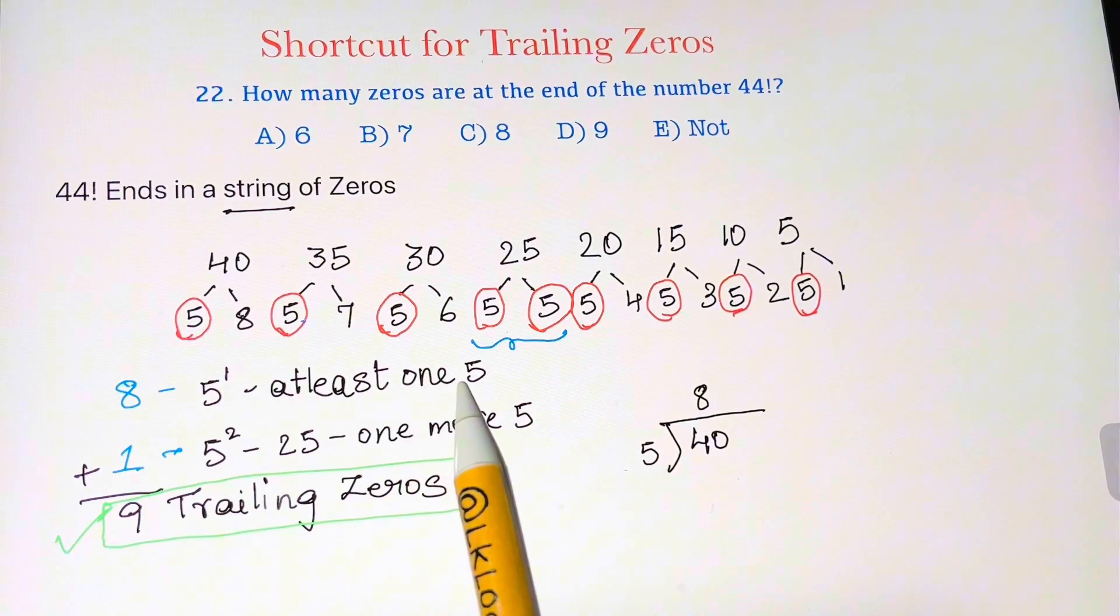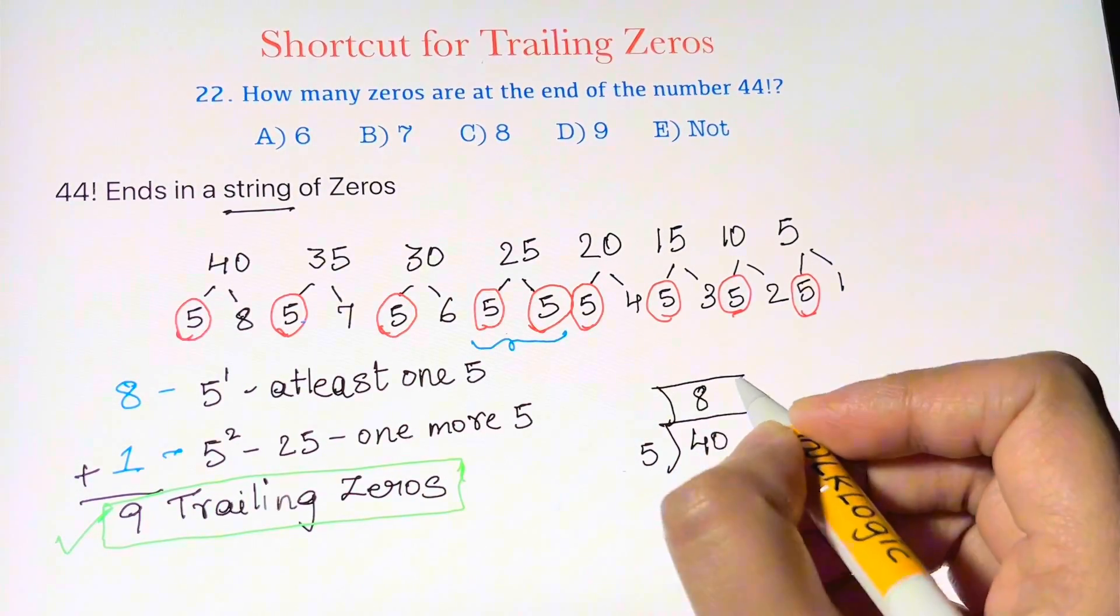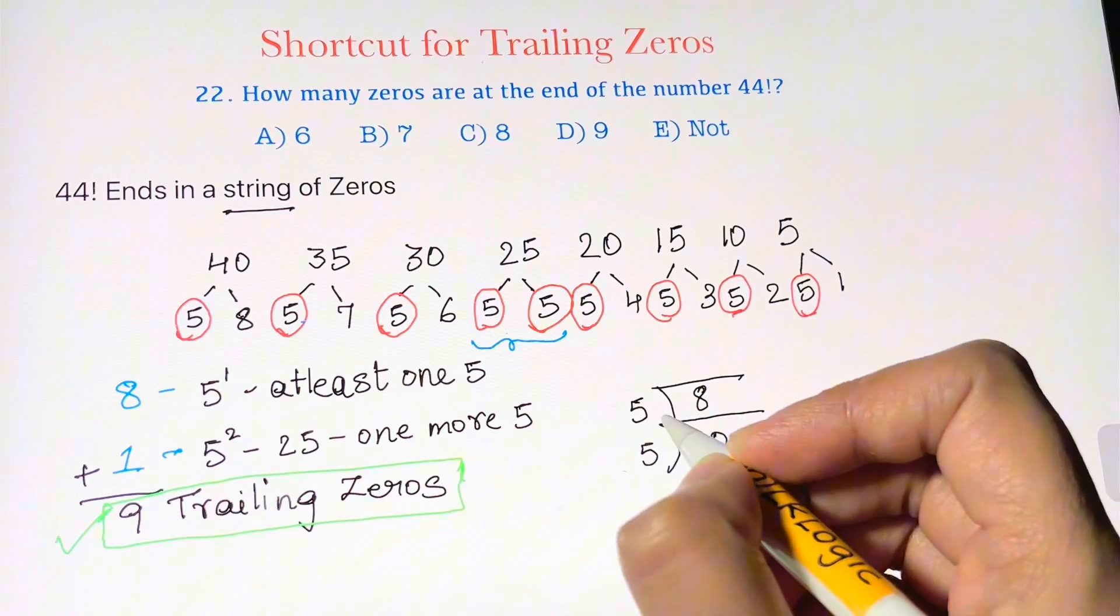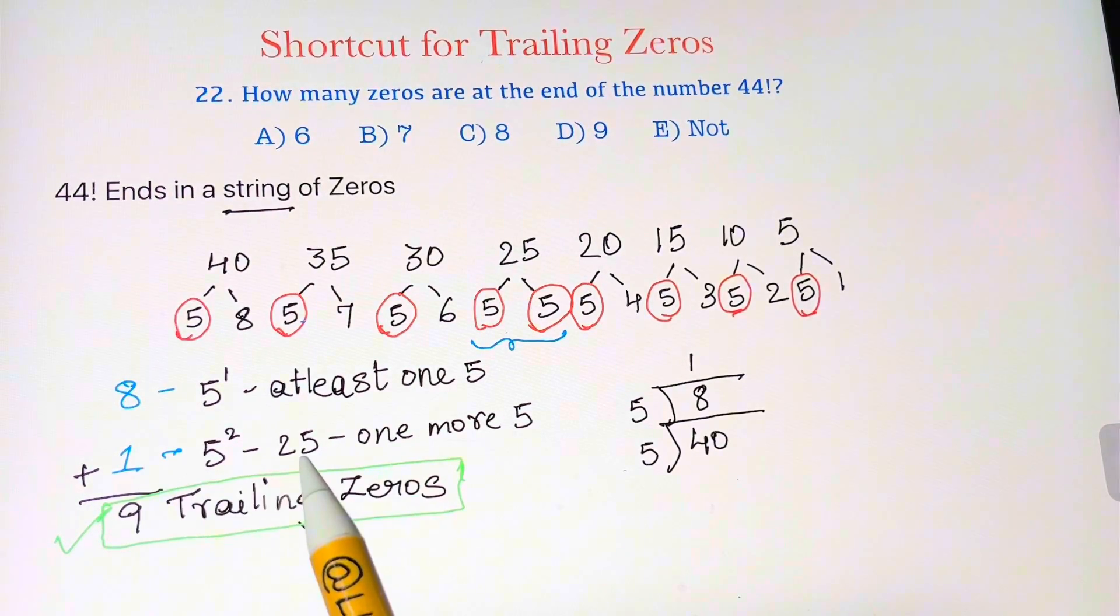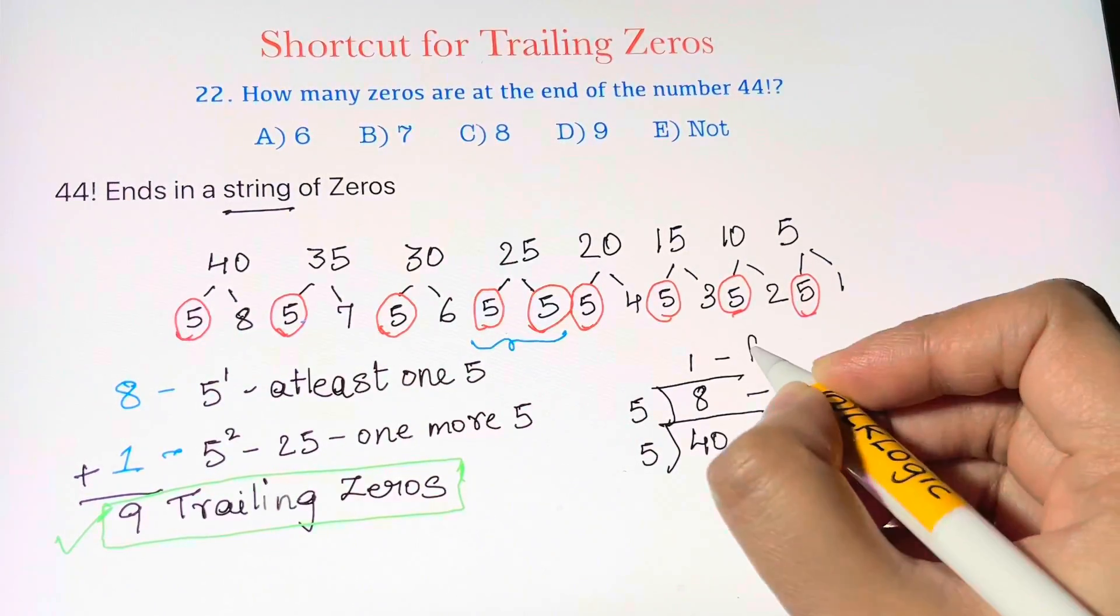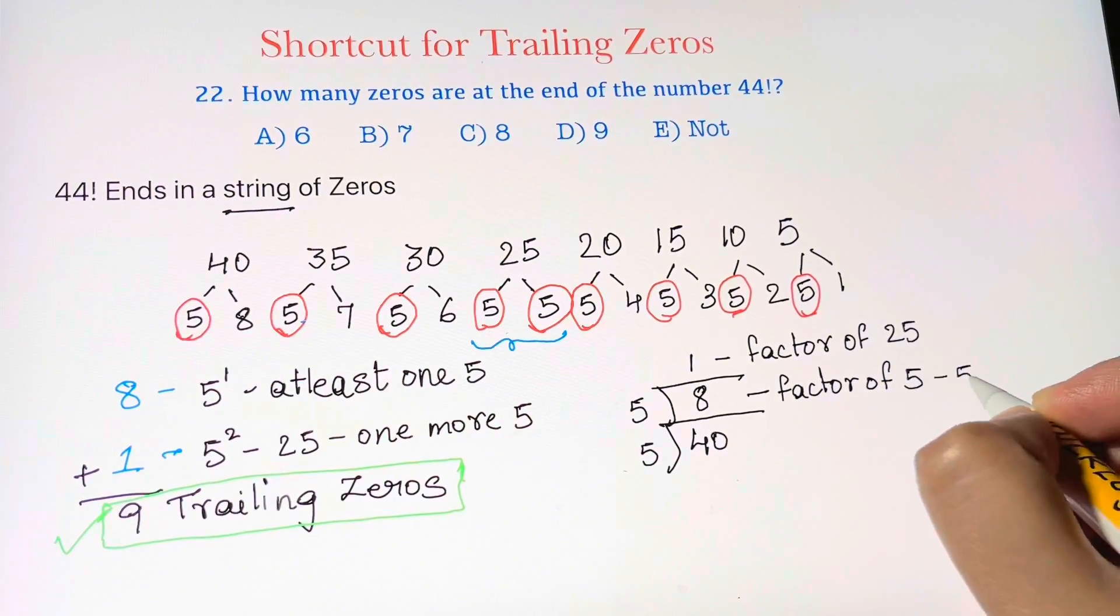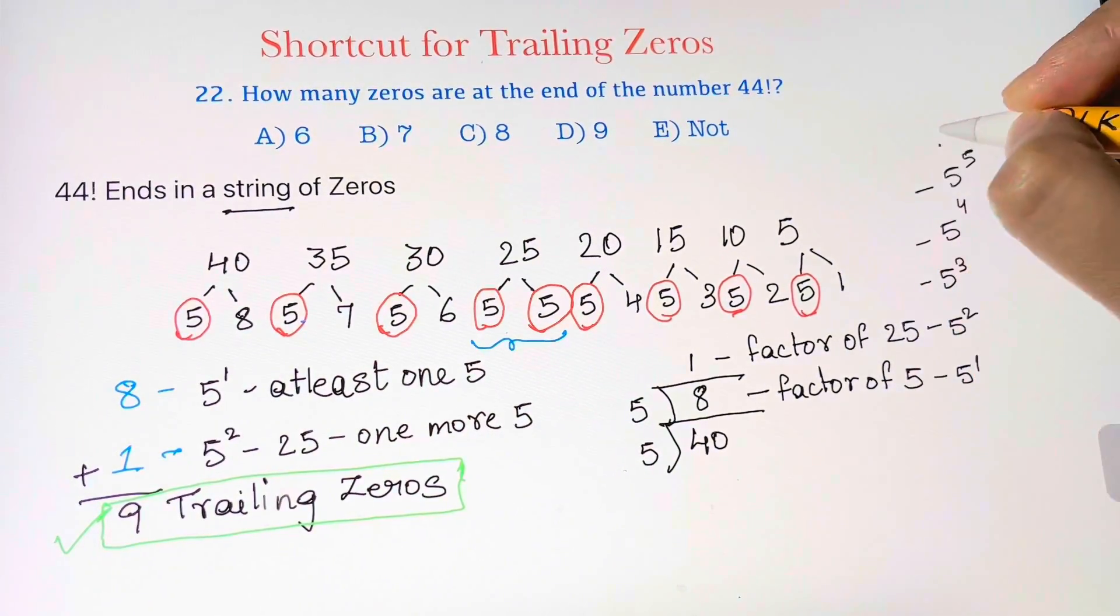And then I'm going to take that and divide that by 5, and I get 1. That corresponds to the factors of 25, which gives you the additional 5. So again, this is a factor of 5 and this is a factor of 25. If you have a bigger number, you can keep going up and up.